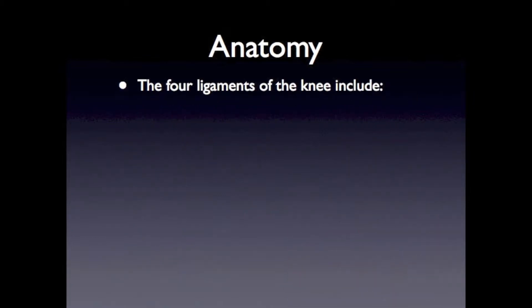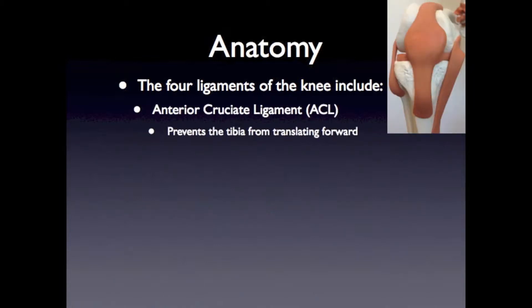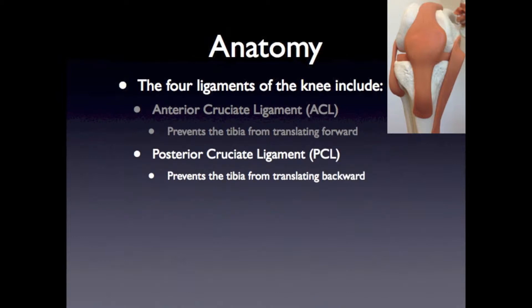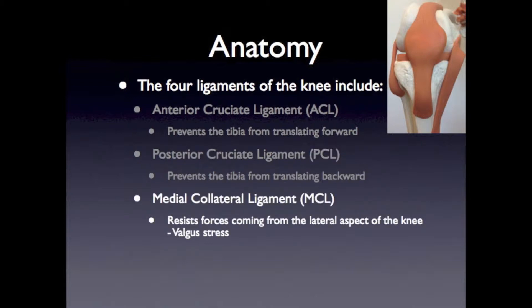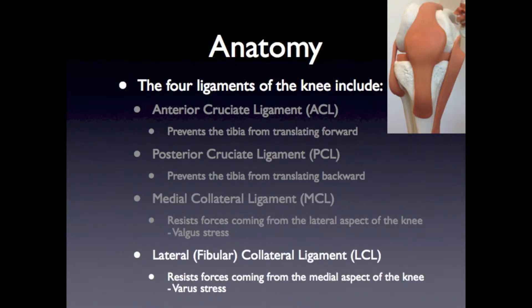The four ligaments of the knee include the anterior cruciate ligament, or ACL, which prevents the tibia from translating forward. The posterior cruciate ligament, or PCL, which prevents the tibia from translating backward. The medial collateral ligament, or MCL, which resists forces coming from the lateral aspect of the knee, also known as valgus stress. And the lateral or fibular collateral ligament, or LCL, which resists forces coming from the medial aspect of the knee, also known as a varus stress.